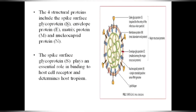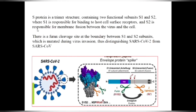The four structural proteins include the spike surface glycoprotein, envelope protein, matrix protein, and nucleocapsid (N). The spike surface glycoprotein plays an essential role in binding to the host cell receptor and determines host tropism. The S protein is a trimer structure containing two functional subunits — S1 and S2 — where S1 is responsible for binding to host cell receptors, and S2 is responsible for membrane fusion between the virus and the cell. There is a furin cleavage site at the boundary between the S1 and S2 subunits.